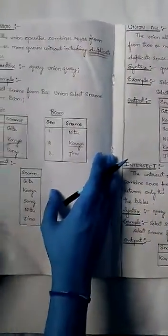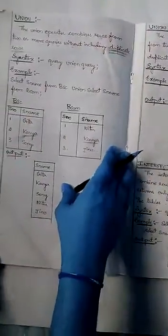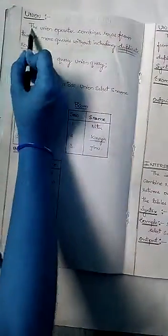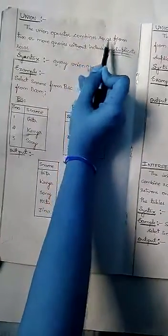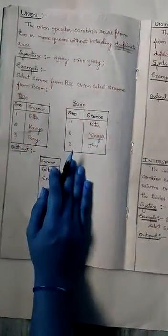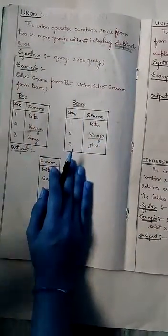Now we are going to discuss about the union operator. The union operator combines rows from two or more queries without including duplicate rows. That is, the union operator does not include any duplicate rows. Coming to the syntax: query union query.